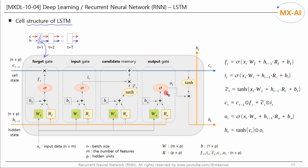This is the basic structure of an LSTM cell. The previous hidden state H of T minus 1 is entered into this cell, and HT is passed to the next time step. Similarly, the previous cell state C of T minus 1 is also input into this cell, and CT is passed to the next step. An LSTM cell consists of a FORGET gate, an INPUT gate, a CANDIDATE memory, and an OUTPUT gate — four blocks in total.